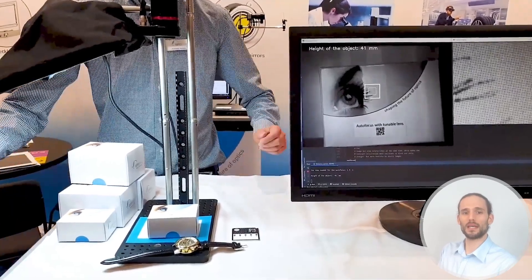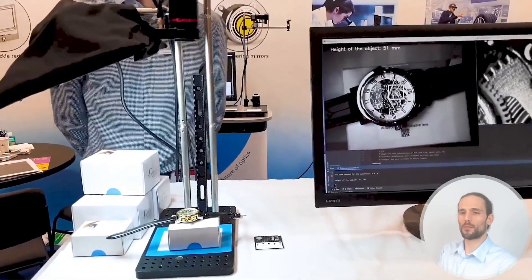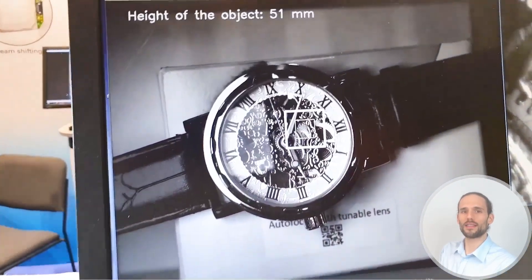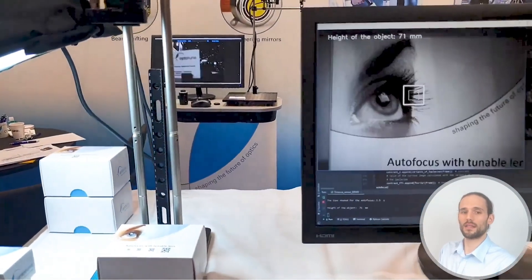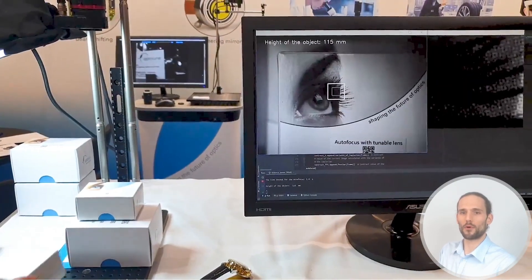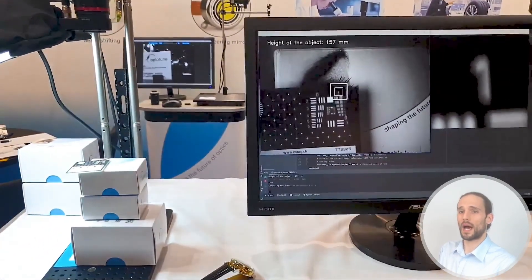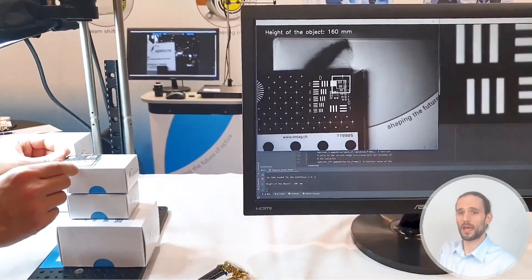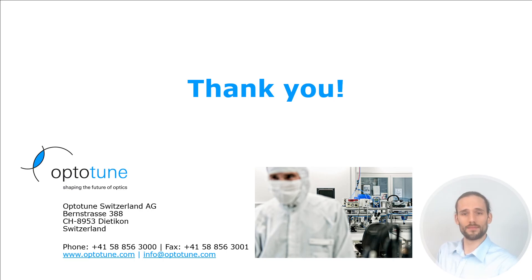And now you can see basically my colleague stacking up objects into the object plane. And you can see how reactive the software is, which basically first puts the image in focus and then reads out the distance of the object. Again, we can do this one more time, different objects stacking more and more. You see how fast this reacts. The height of the object updates within a second. And again, this works for different materials. The presentation is over. Thanks for watching. Take care.